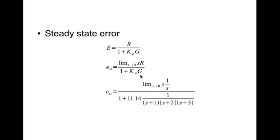Now we'll find steady state error. The steady state error is given by E equal to R divided by 1 plus Kp times G. Steady state error ESS is limit as s tends to 0, s times E of s, which is limit of s tends to 0, s times R divided by 1 plus Kp times G. S is the step function. I substitute for G and Kp and this is what my steady state error is going to look like.